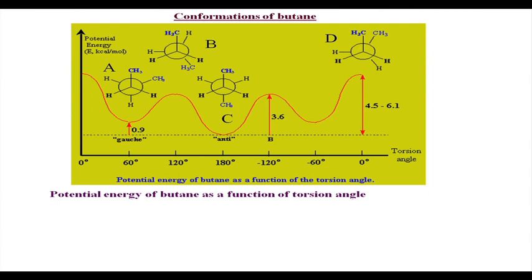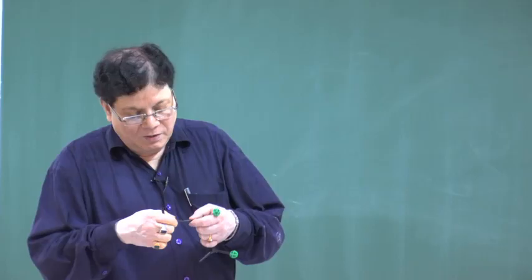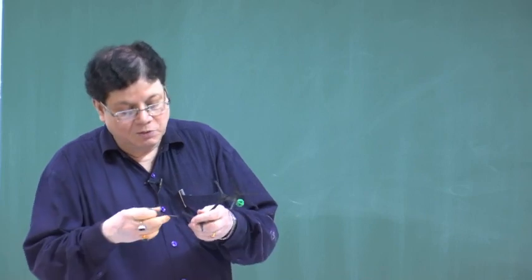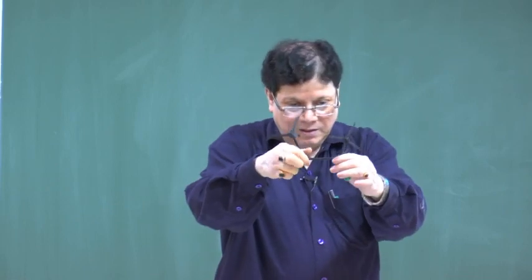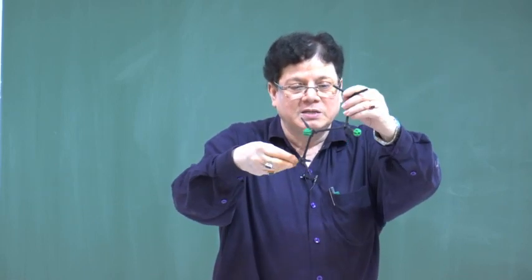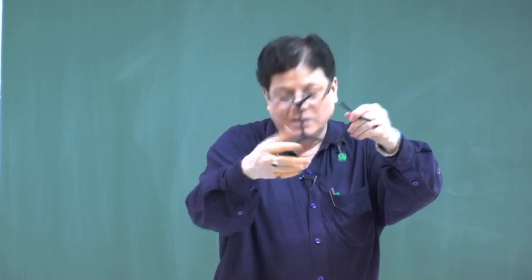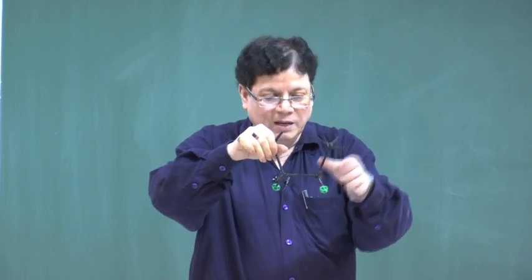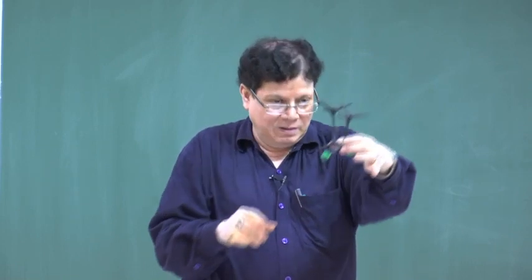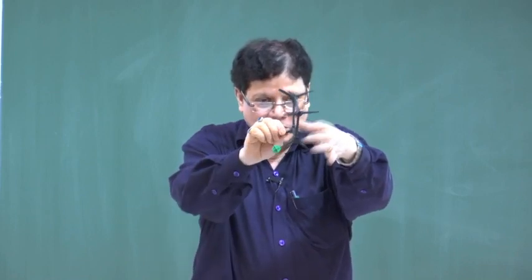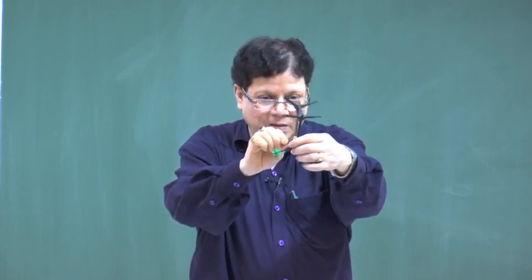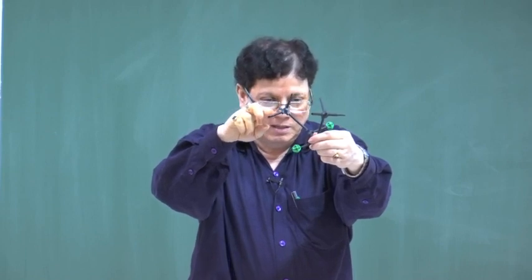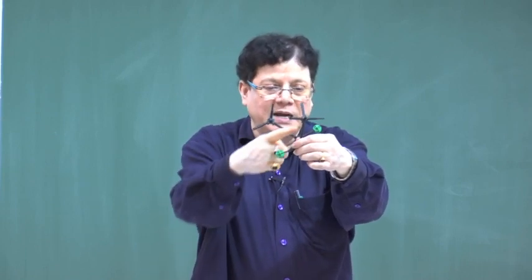In n-butane, you have one extra carbon on the two carbons. You see there is again the free rotation. These are the hydrogens and this is the methyl. This is the eclipsed conformation because the bonds are eclipsing each other. And as you start rotating, you see this is the staggered conformation where the bonds are anti to each other.